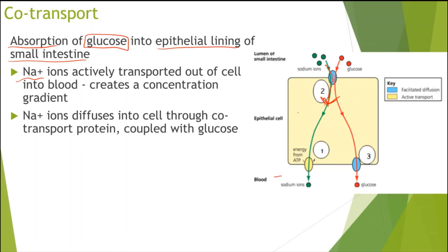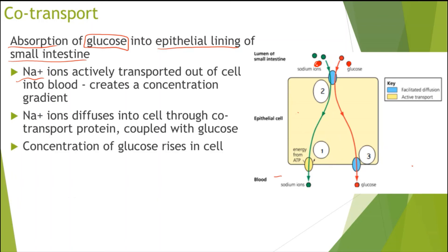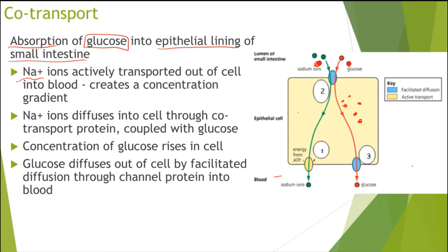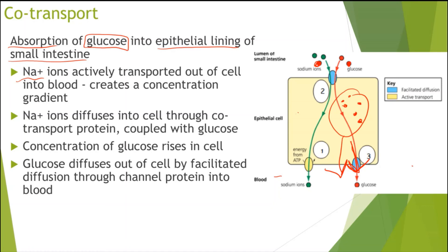The sodium ions are coupled with glucose — so as one sodium ion travels through the co-transport protein, a glucose molecule also travels with it. For every one sodium ion, there is a glucose as well. This means the concentration of glucose in the cell starts to rise. Because there is now a higher concentration of glucose in the cell, the glucose ultimately diffuses out of the epithelial cell by facilitated diffusion through a channel protein — down a concentration gradient into the blood, since there is not a lot of glucose in the blood.